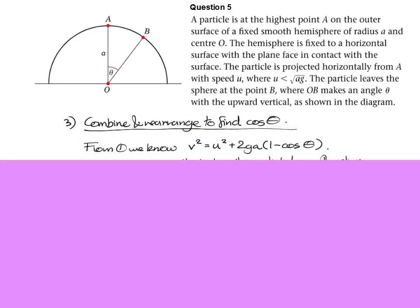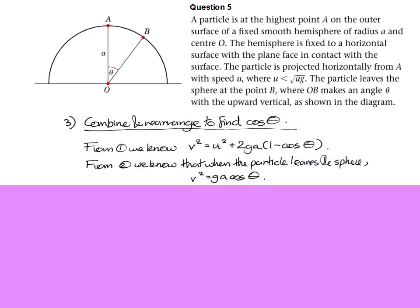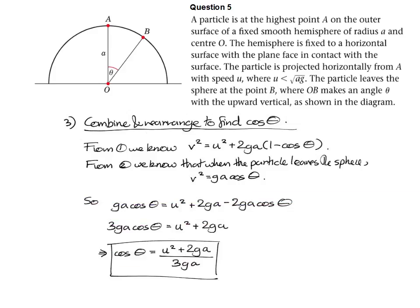From the first part, we have this general expression for the velocity when you've rotated round a particular angle. From the second part, we've got this expression for how fast it's going when it leaves the sphere. So if we equate these, multiply out and rearrange, we should hopefully be able to get an expression for cos theta. It's certainly in both of those. Let's see what happens. Multiply out, rearrange, divide everything by 3 ga, and we get this really nice formula here, this really nice expression. It's telling us that cos theta is u squared plus 2 ga divided by 3 ga.